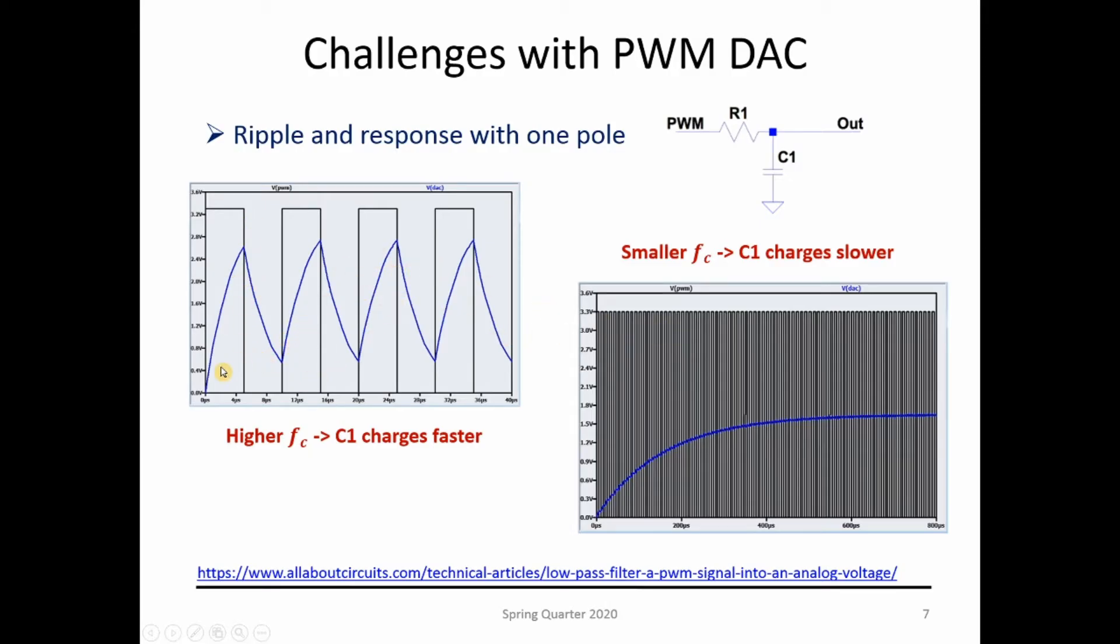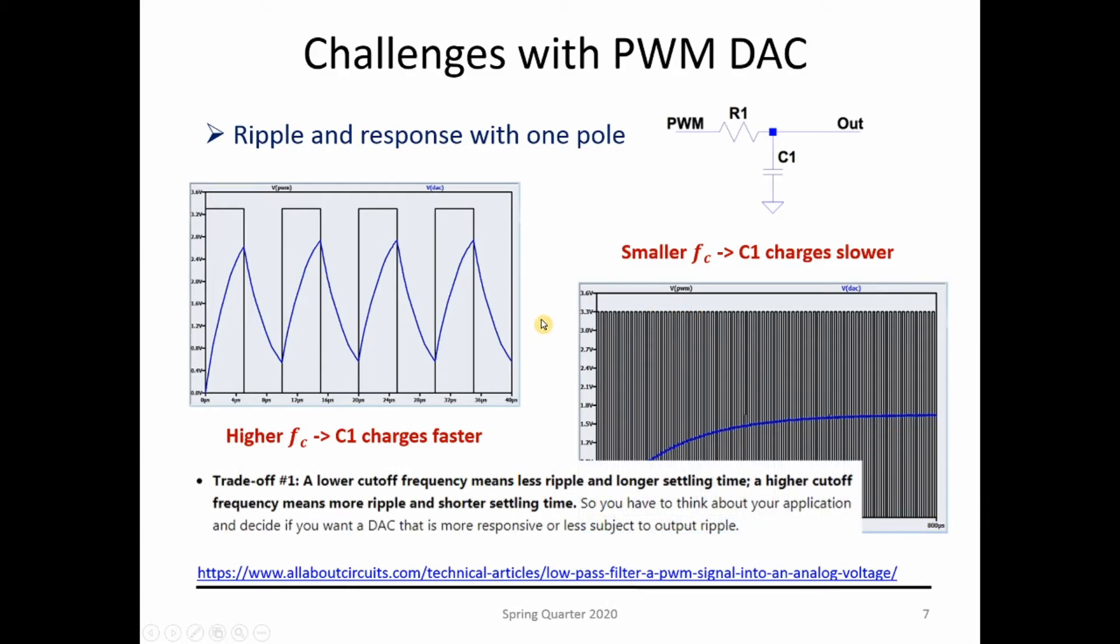If I want to get rid of that ripple, I go to a smaller frequency closer to my DC, but then C1 charges slower because of this resistor, and in that case it's just going to take more time to settle down. There is a trade-off. A lower cutoff frequency means less ripple but a longer settling time. A higher cutoff frequency means more ripple and a shorter settling time. You need to think about your application and decide what is going to be sufficient for your needs.